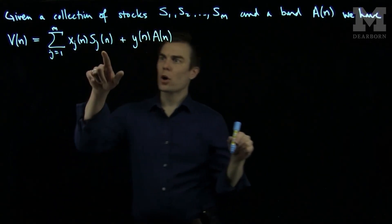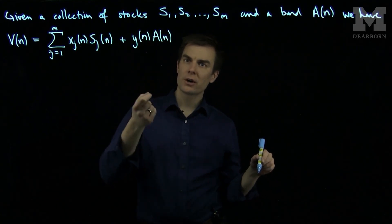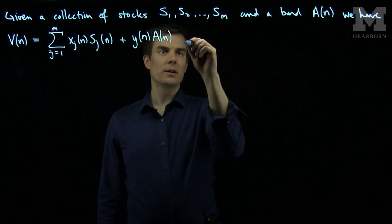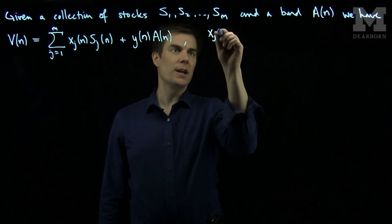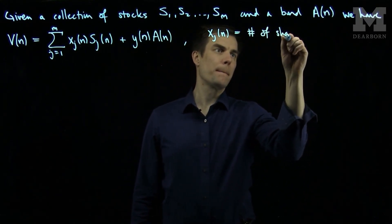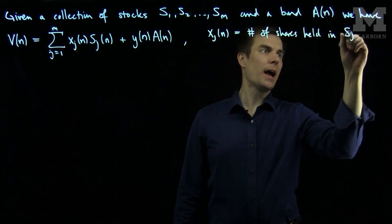The coefficients x_j(n) and y(n) are the number of shares held in stock S_j between time n-1 and n.